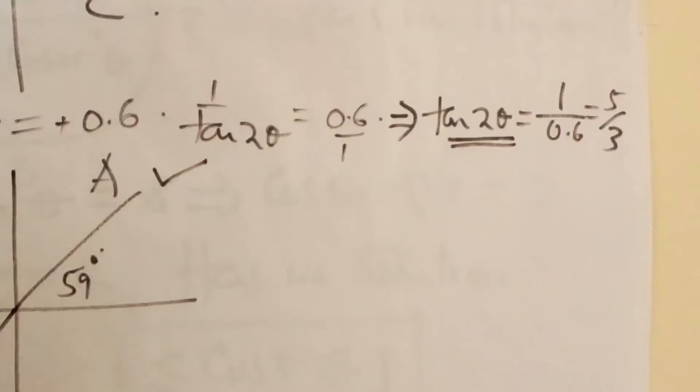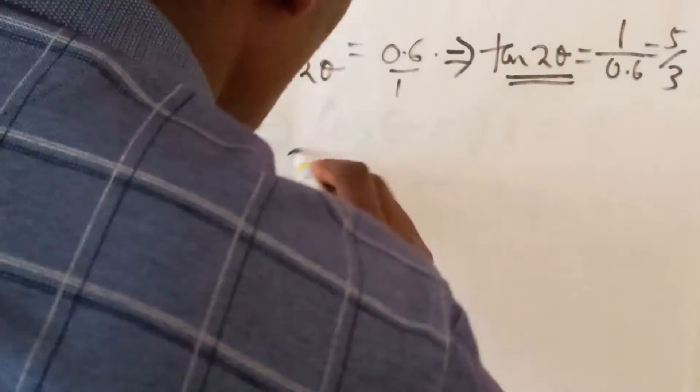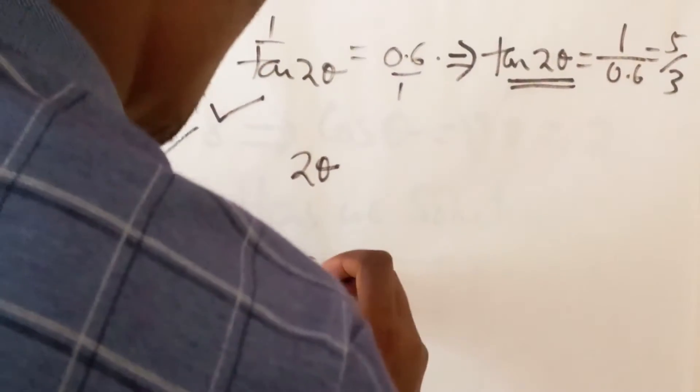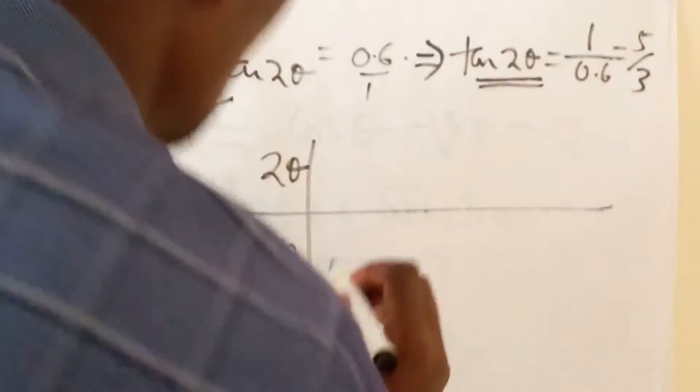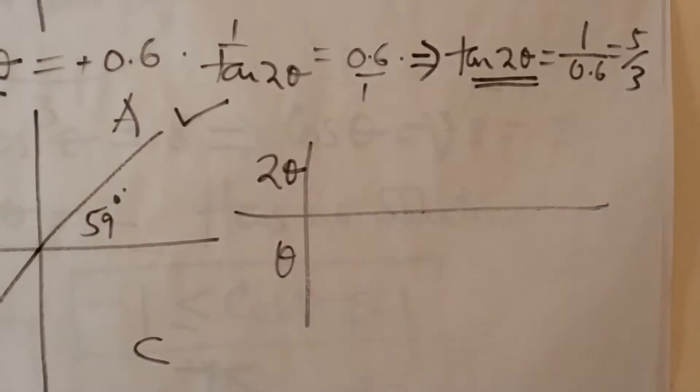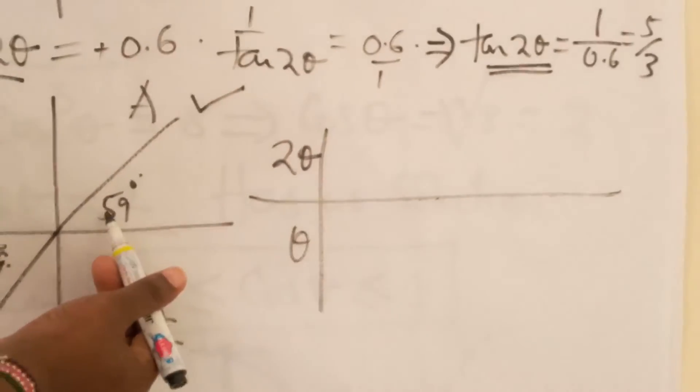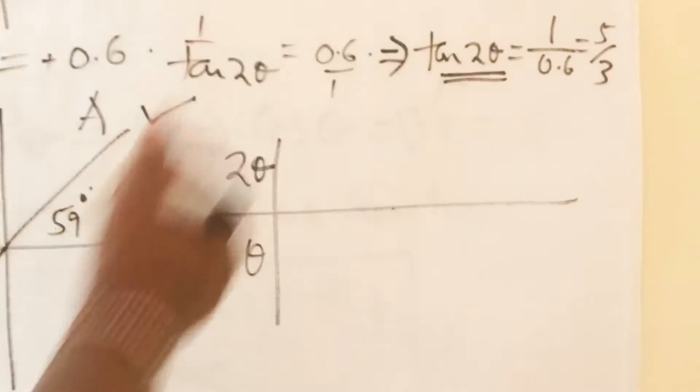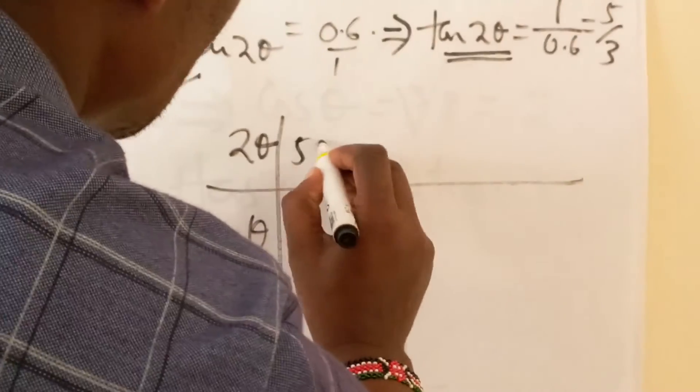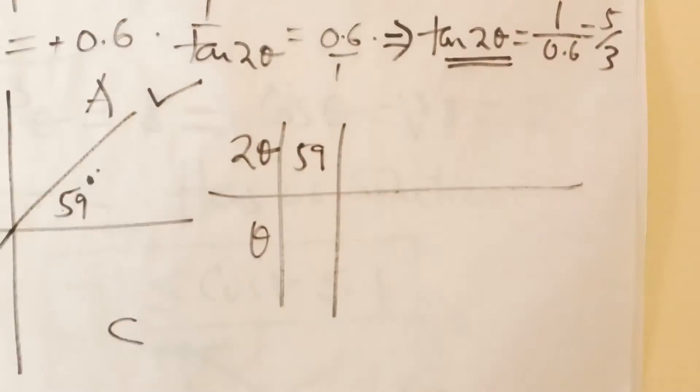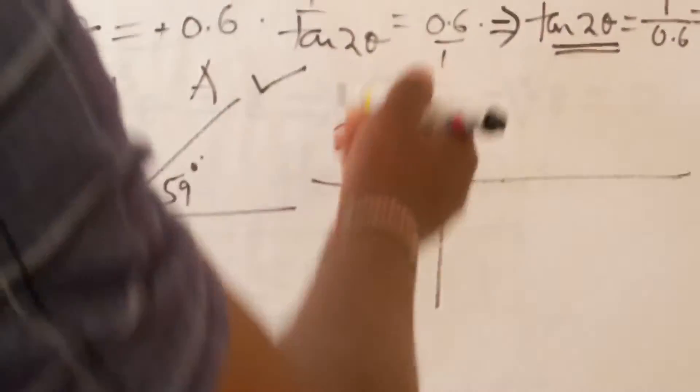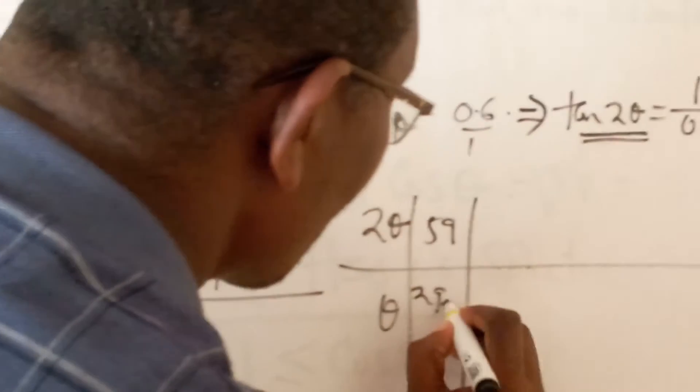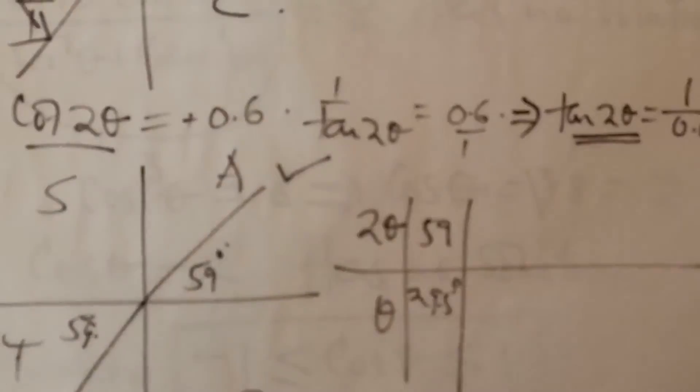It is important to note that we are still talking about 2 theta. We must also talk about theta, because the question is upon theta. If the tangent of 59 is 5 over 3, at some point 2 theta is 59 degrees. So what is theta? Theta is simply the half of this, which is 29.5 degrees.